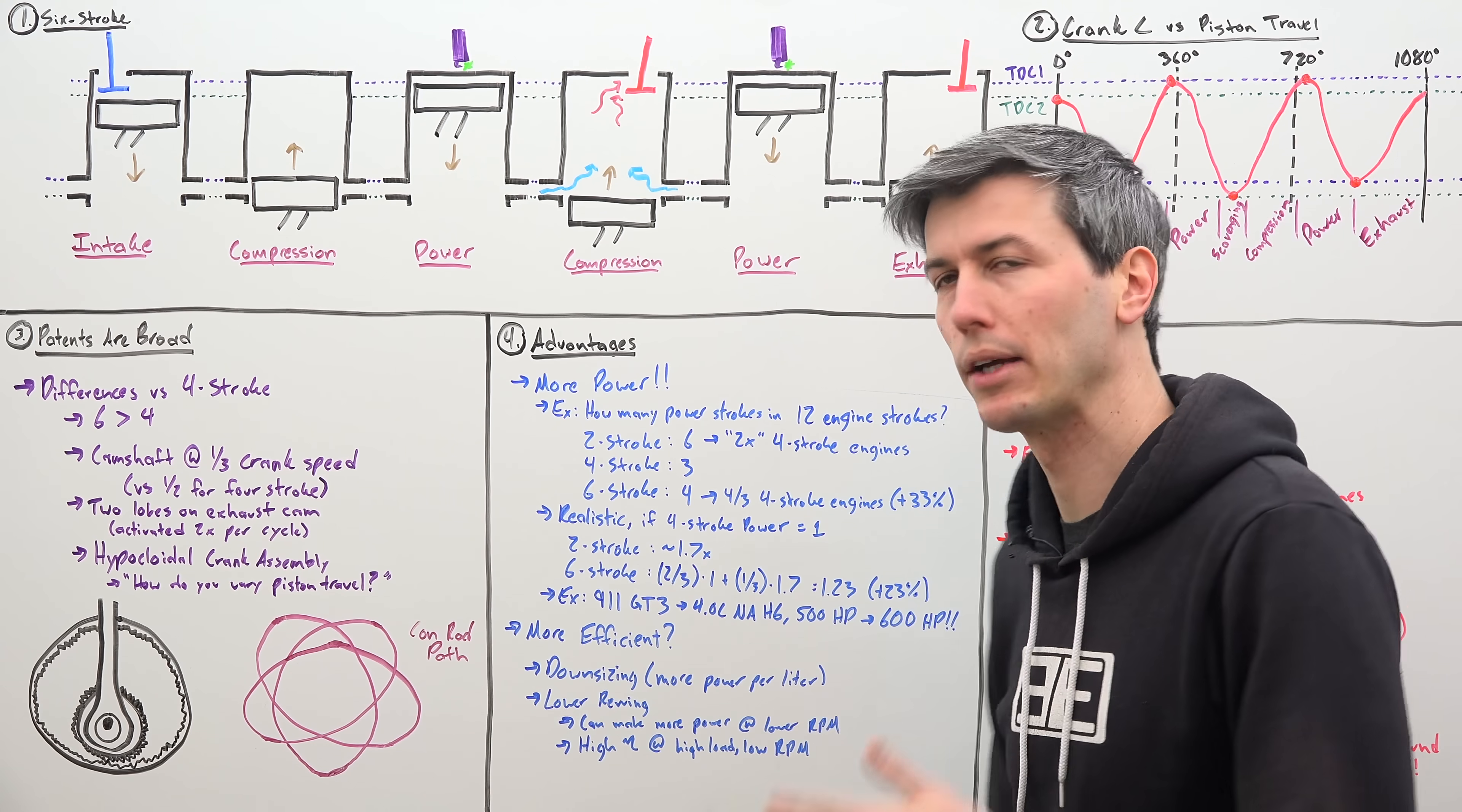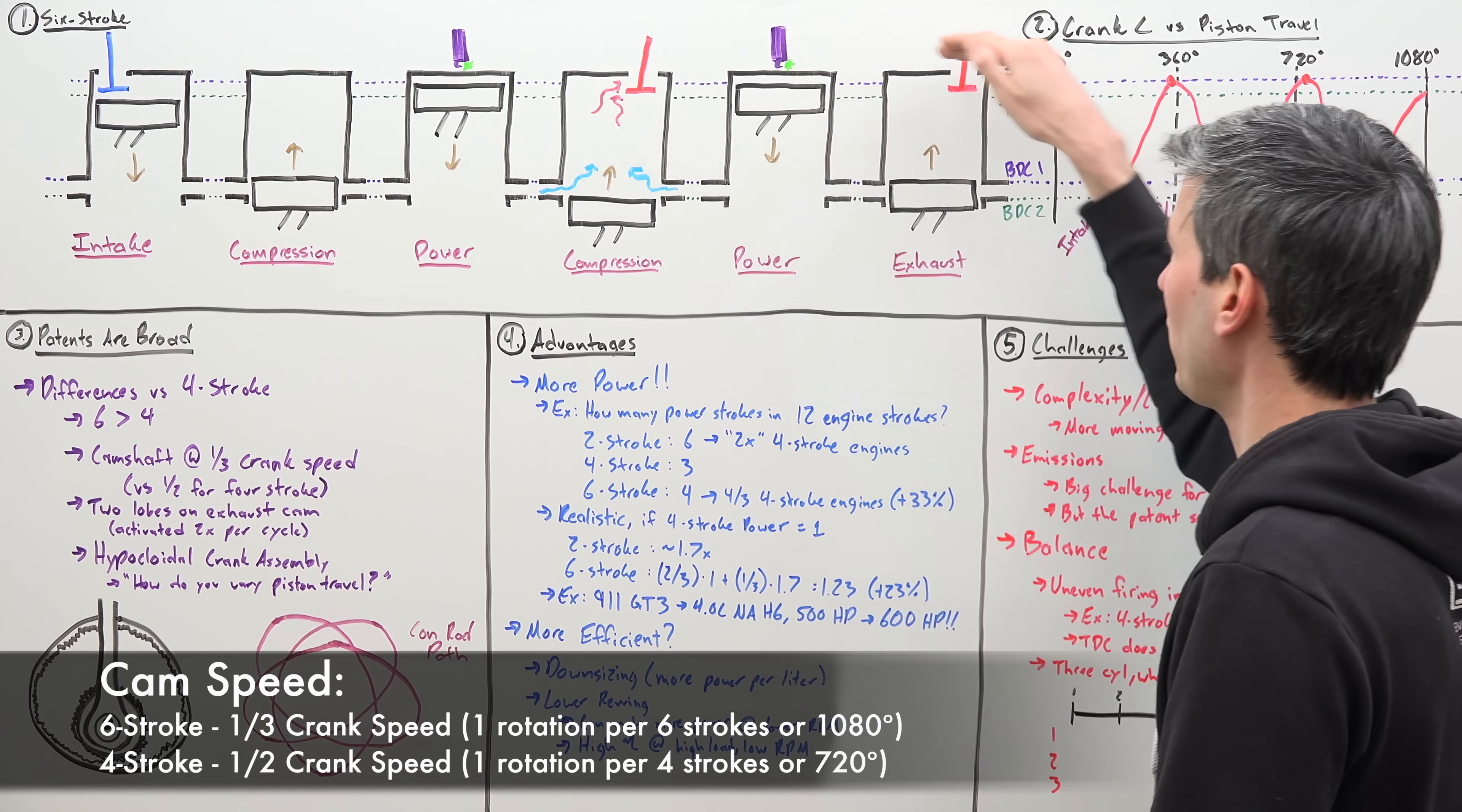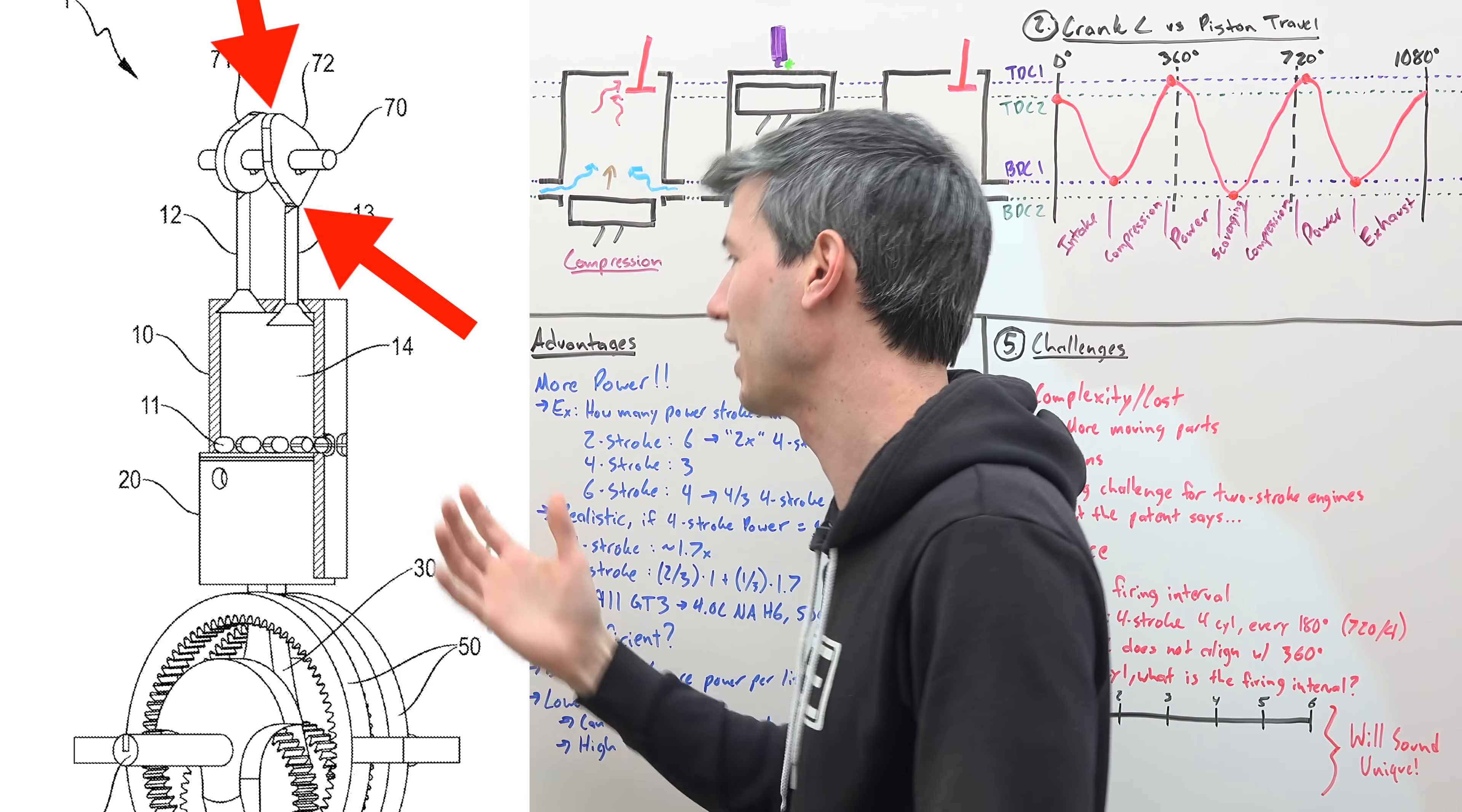So obviously six strokes versus four and we've added a power stroke. One of the important things to realize here is that now our camshaft is going to rotate at one third of the crankshaft speed rather than one half of the crank speed like you would have with a four stroke, because you have three full rotations of that crankshaft for one rotation, one actuation of each point here for these valves. An interesting point is that for the exhaust cam in the patent drawing, they actually show two different lobes on it because that exhaust valve is going to open up during the stroke here and then during this stroke here. So a two lobe exhaust cam profile, kind of cool to see.